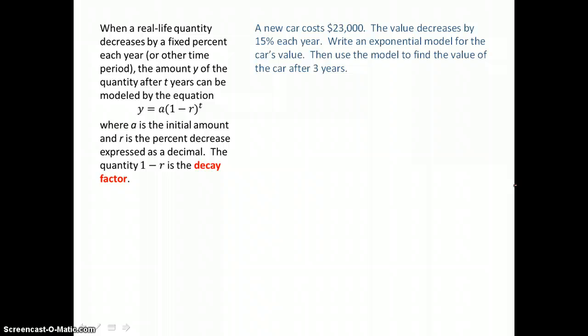Here we're going to look at an exponential decay model. y equals a times the base 1 minus r raised to the t power. We can use that in a problem like this, where a new car costs $23,000. The value decreases by 15% each year. Write an exponential model for the car's value. Then use the model to find the value of the car after 3 years.